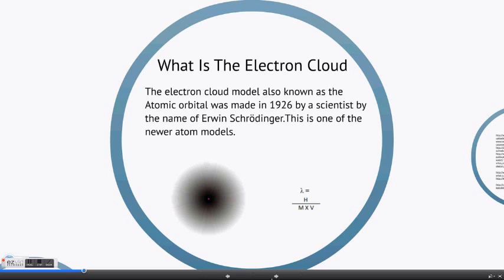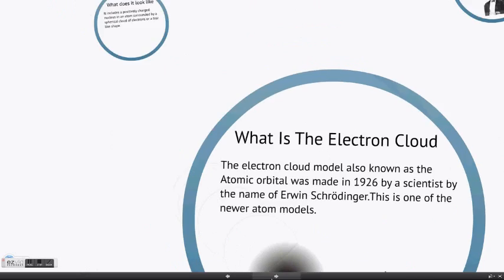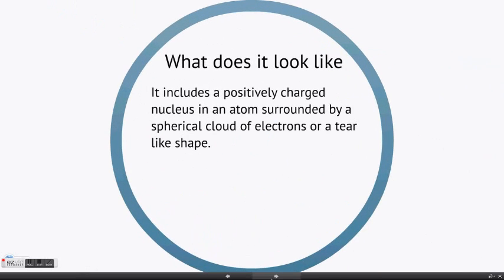Wavelength equals Planck's constant divided by mass times velocity. What does it look like? It includes a positively charged nucleus surrounded by a spherical cloud of electrons, or a tear-like shape.